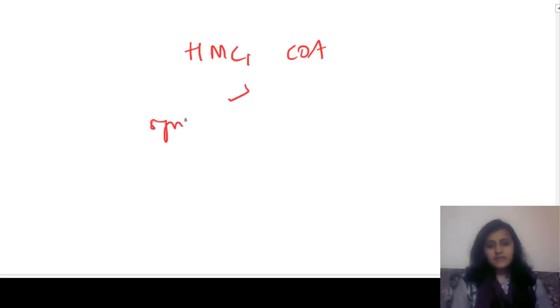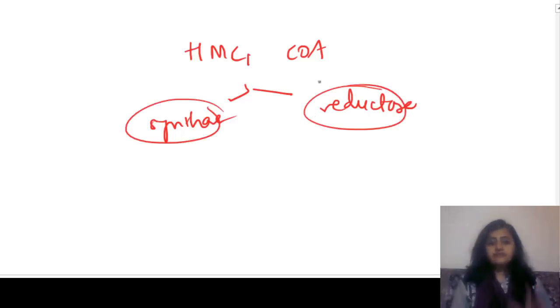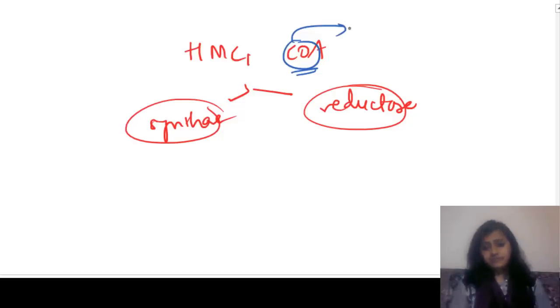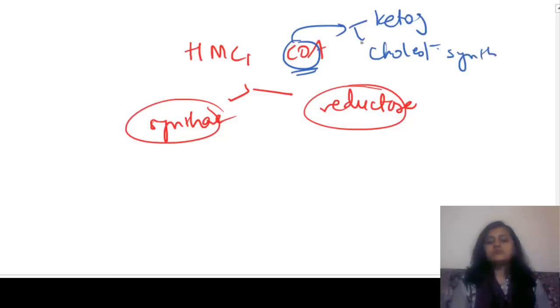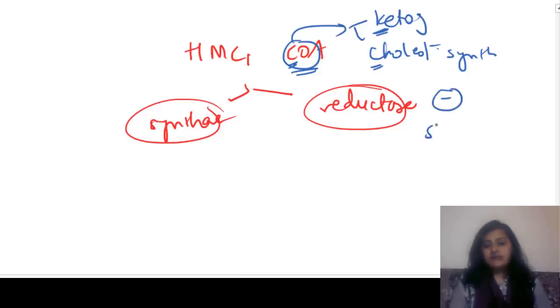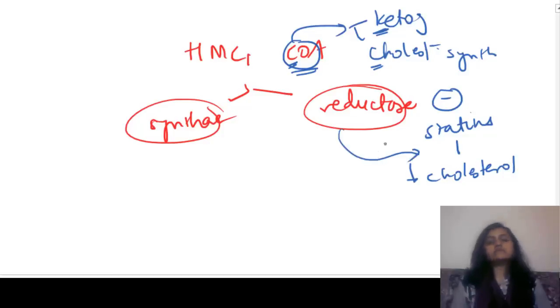Now for ketogenesis and cholesterol synthesis, both involve HMG-CoA. You have HMG-CoA synthase and HMG-CoA reductase. HMG-CoA reductase inhibitors are statins, and we know statins decrease cholesterol. So HMG-CoA reductase is the rate limiting enzyme for cholesterol synthesis, and automatically HMG-CoA synthase becomes the rate limiting enzyme for ketogenesis.